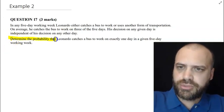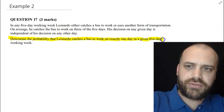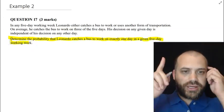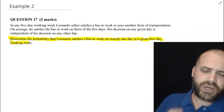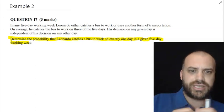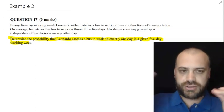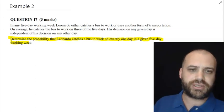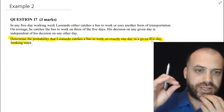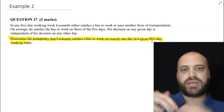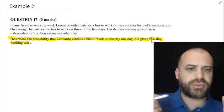Determine. Determine the probability that Leonardo catches a bus to work on exactly one day in a given five day week. One day out of five days. What have I been able to ascertain? I know straight away that this question is binomial probability. I know that straight away, this is binomial probability. I also know that I've got five days in the given thing so that must be my number of trials. So the only thing that's left is to find a probability.